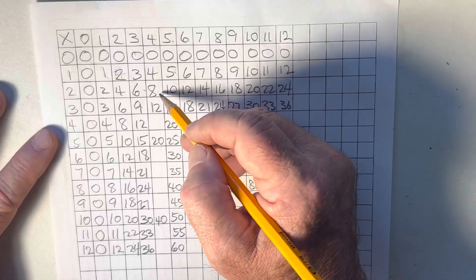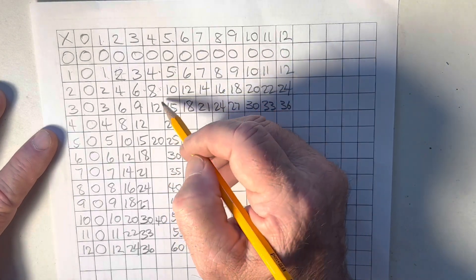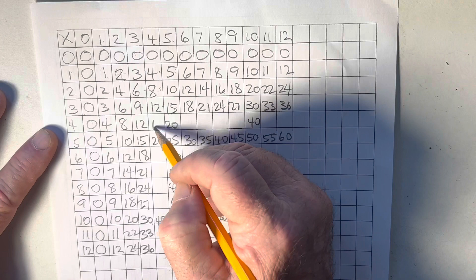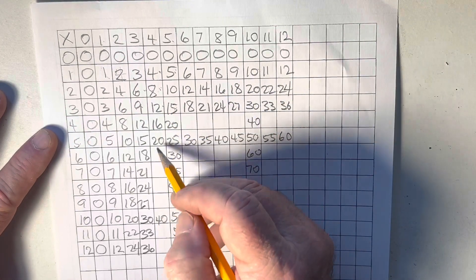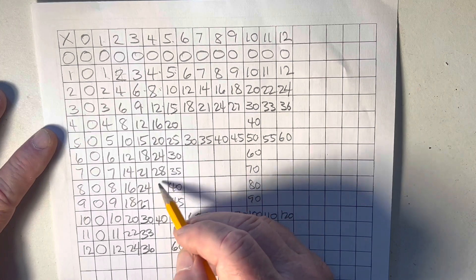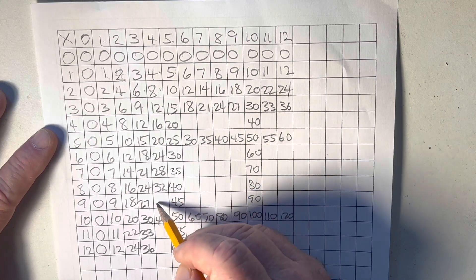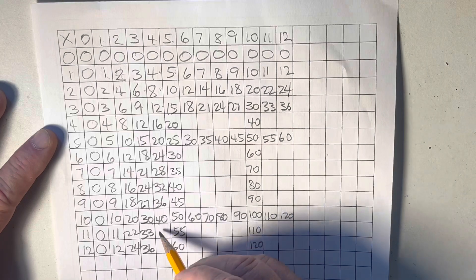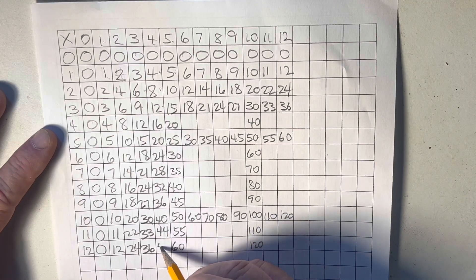Now, we go to the 4's. 4 plus 4 is 8. 8 plus 4 is 12. 12 plus 4 is 16. 16 and 4, 20, 24, 28, 32, 36, 40, 44, 48.